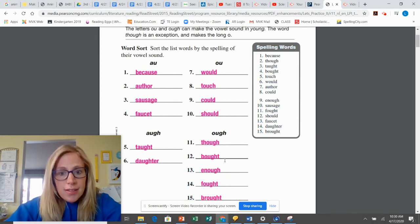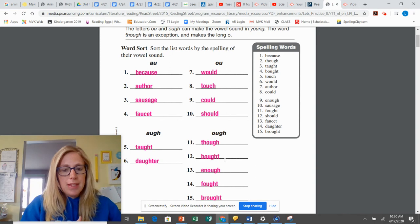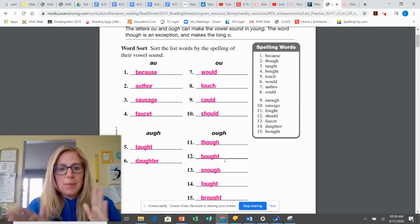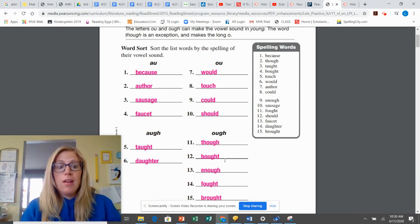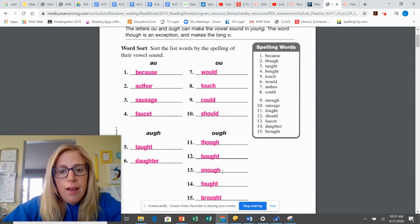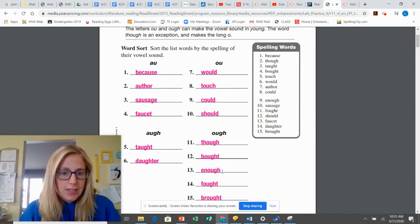Then we have bought, the past tense of buying something. Now, bought and taught sound the same. They rhyme, but they are spelled differently. You have to try to remember, taught is spelled with AUGH. And we have enough. If you have enough of something, that means you have plenty of it.